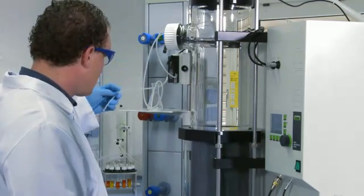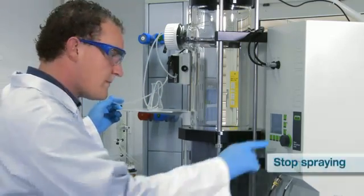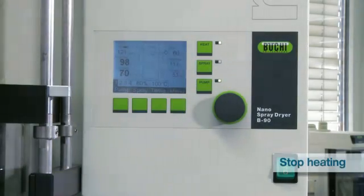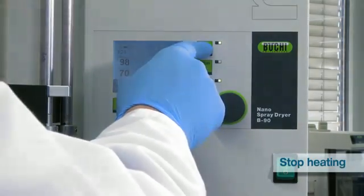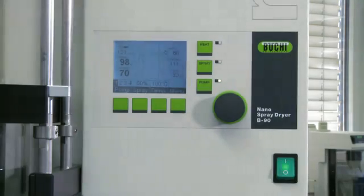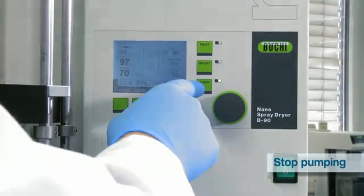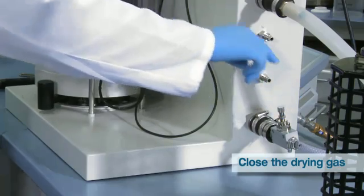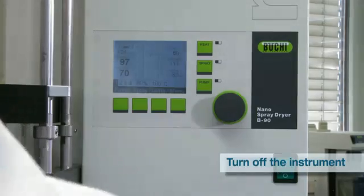Remove the inlet tube from the sample to empty out any residue from the tubing system. Switch off the spray head by pressing the spray button. Switch off the heater by pressing the heat button and switch off the pump by pressing the pump button. Finally, turn off the drying gas by closing the valve and turn off the instrument.